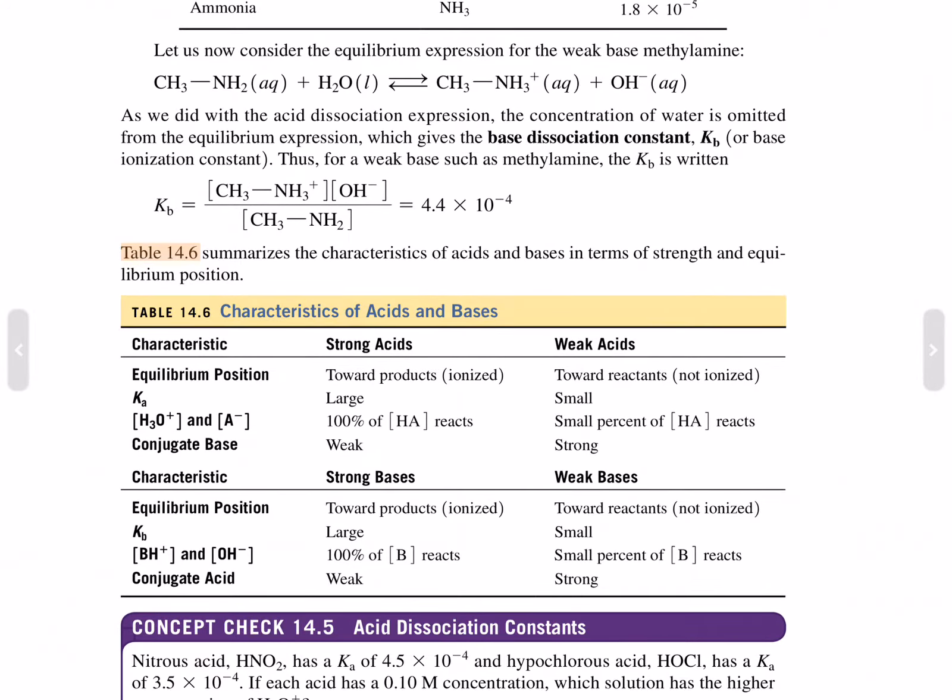K sub A of strong acids are towards products and are very large. They dissociate at 100%, which is all reactants, and the conjugate base is very weak. Weak acids, the equilibrium position or K sub A is very small. It's towards the reactants, and a small percent of product reacts. It has a strong conjugate base.